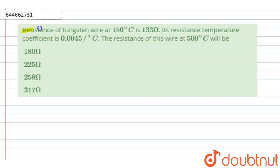The given question is: resistance of tungsten wire at 150 degrees Celsius is 133 ohms. Its resistance temperature coefficient is 0.0045 per degree Celsius.